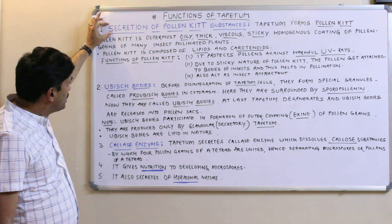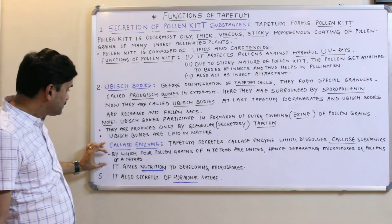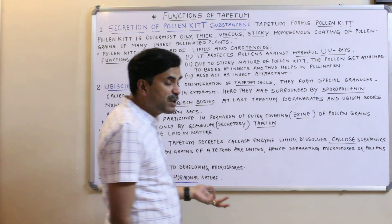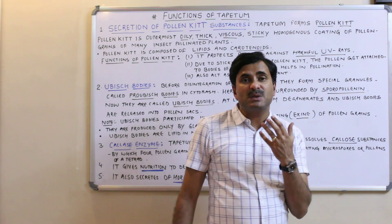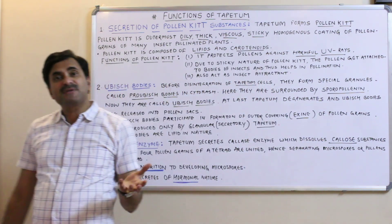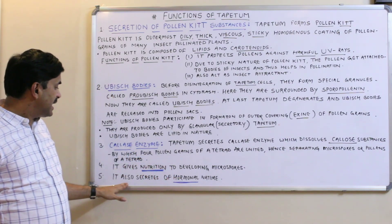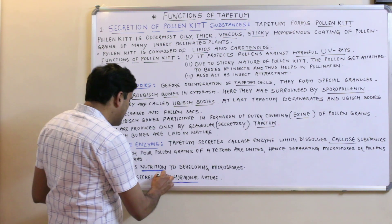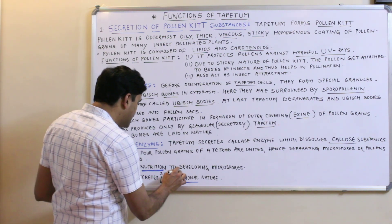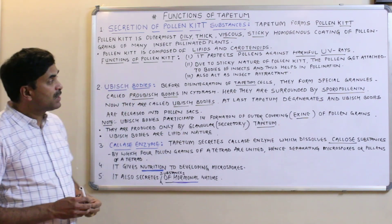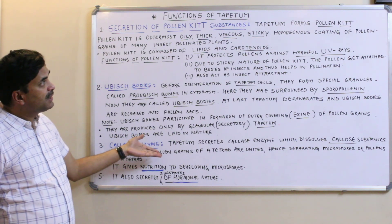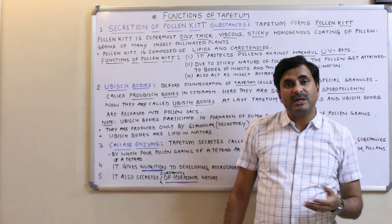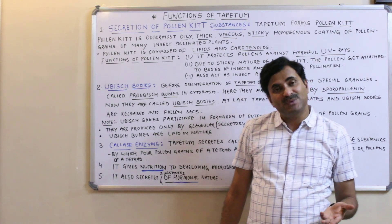So the tapetum secretes pollen kit, Ubisch bodies, and callase enzyme. It is also well known that the tapetum gives nutrition to the developing microspores — which is why it is called the nutritive layer. It also secretes substances of hormonal nature. These are the important functions of the tapetum. In the next video, we will deal with the two types of tapetum: amoeboid tapetum and secretory tapetum.